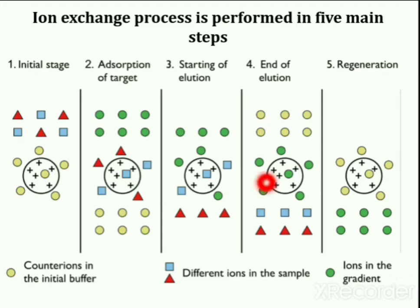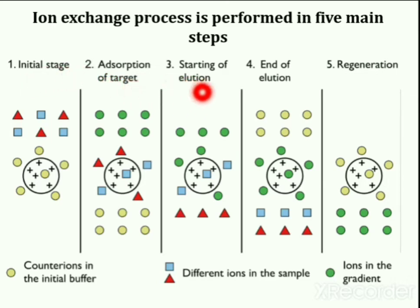This diagram represents the complete ion exchange process. Ion exchange chromatography is performed in five main steps: first, the initial stage; second, adsorption of target; third, starting of elution; fourth, end of elution; and fifth, regeneration.